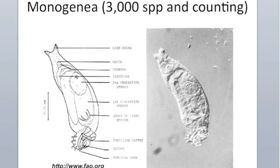Our first parasitic group, the monogenians, have 3,000 to 5,000 species and counting. They have simple life cycles, typically involving only one host. They primarily infect fish, but also infect some other vertebrates including turtles. There's even one species that infects the eyes of hippos, which sounds quite annoying if you're a hippo.